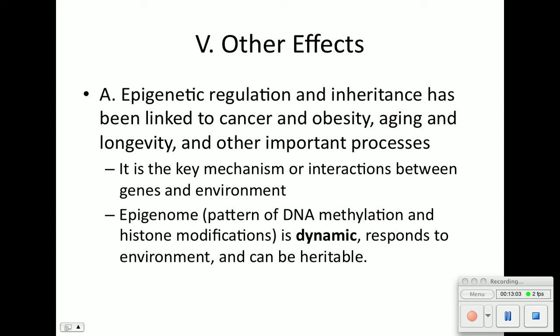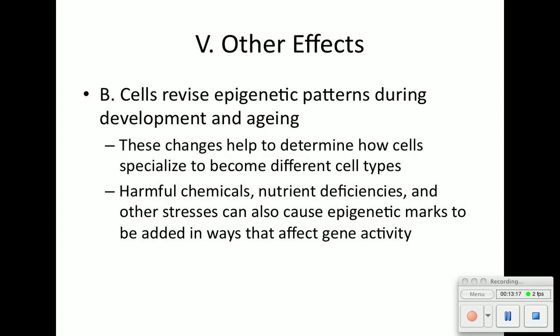The epigenome — the pattern of DNA methylation and histone modification — is dynamic. It responds to the environment but can also be inherited. Our cells can change epigenetic patterns during development and aging, determining how cells specialize into different cell types. If we are exposed to harmful chemicals, nutrient deficiencies, and other stresses, epigenetic marks will be added in ways that affect gene activity.